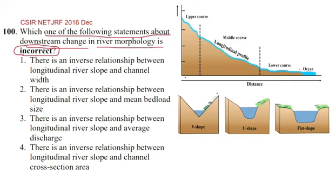This is a river longitudinal profile. In our options, the first one is there is an inverse relationship between longitudinal slope and channel width. If longitudinal slope is more, then channel width is less. Here if we see, channel width is very less but slope is high.